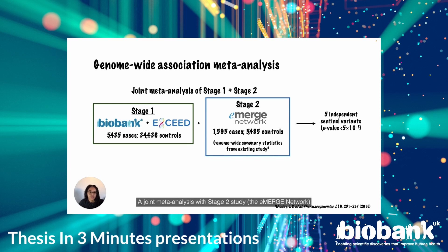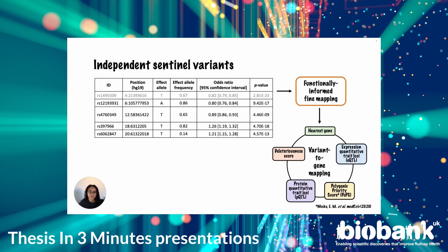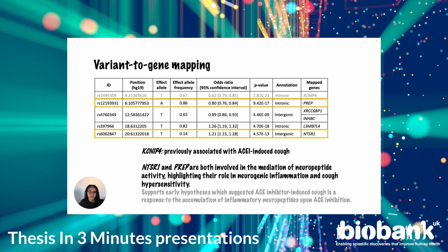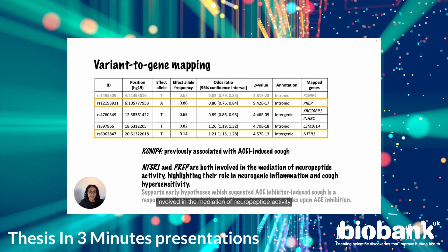A joint meta-analysis with a Stage 2 study, the eMERGE Network, identified five independent sentinel variants. Of these, one has been previously described and four are novel. Fine mapping of these loci was performed to identify putative causal variants for variant-to-gene mapping, which included five well-known elements. Among the mapped genes, as expected, ACEKIN4 was identified, as well as two genes — NTSR1 and PREP — which are both involved in the mediation of neuropeptide activity. This supports hypotheses suggesting this adverse reaction is a response to the accumulation of inflammatory neuropeptides upon ACE inhibition.